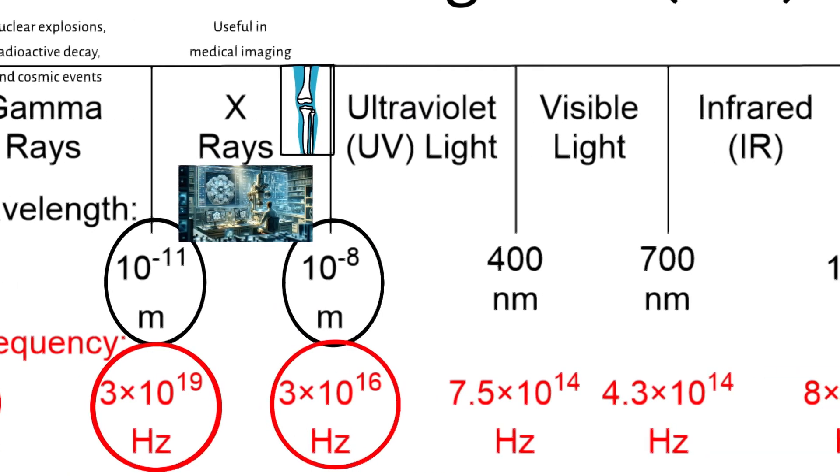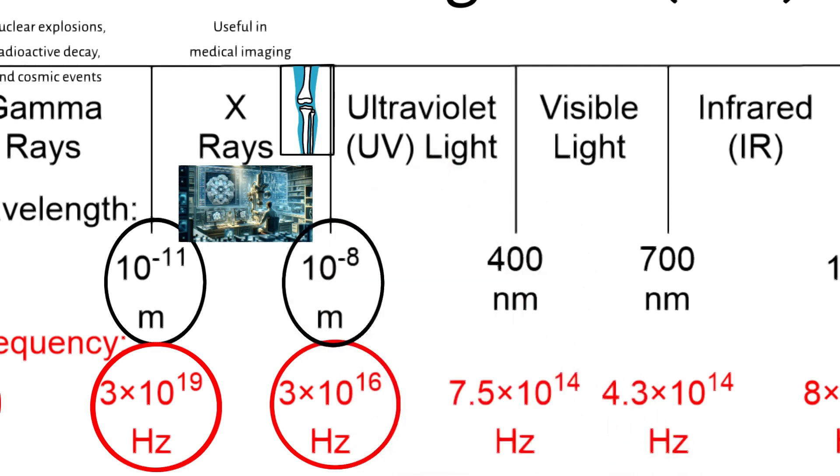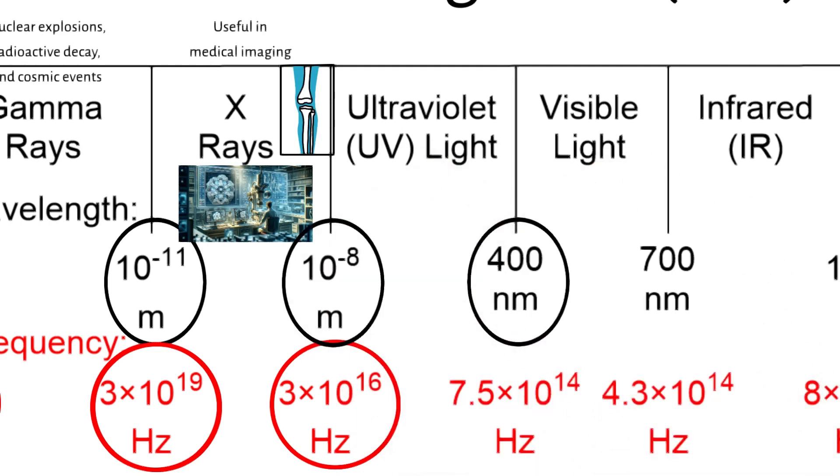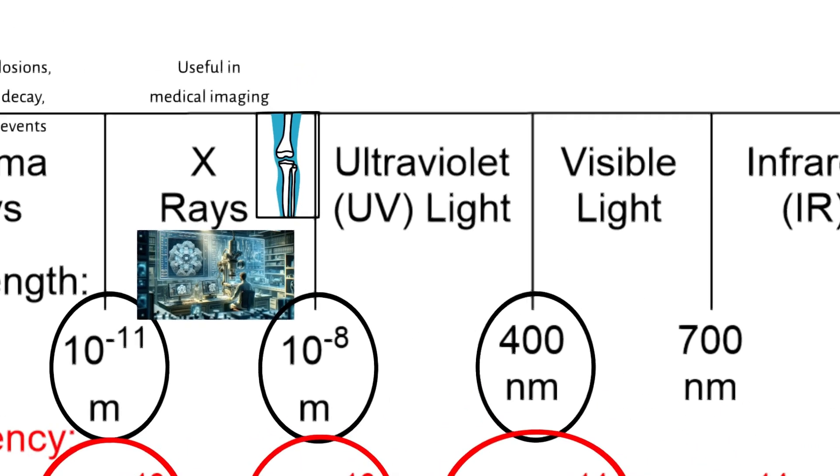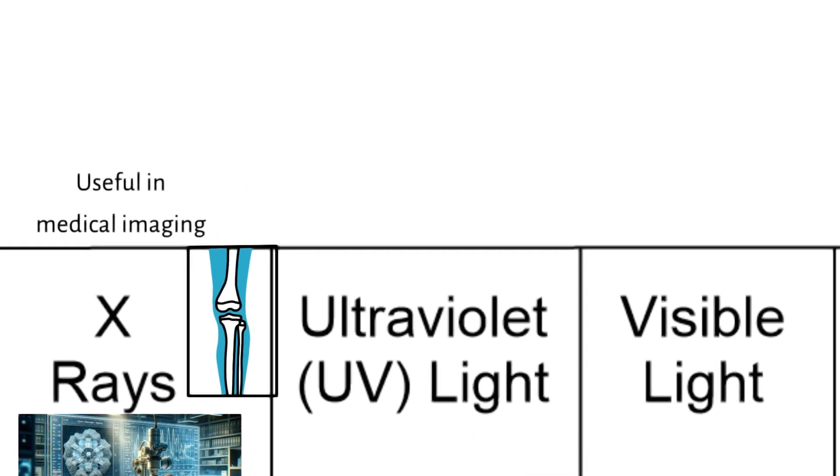The next is ultraviolet UV light. UV light spans wavelengths from about 10 nanometers to 400 nanometers, with frequencies between 7.5 times 10 to the 14th Hertz and 3 times 10 to the 16th Hertz. Furthermore, UV light is divided into several categories based on its wavelength.